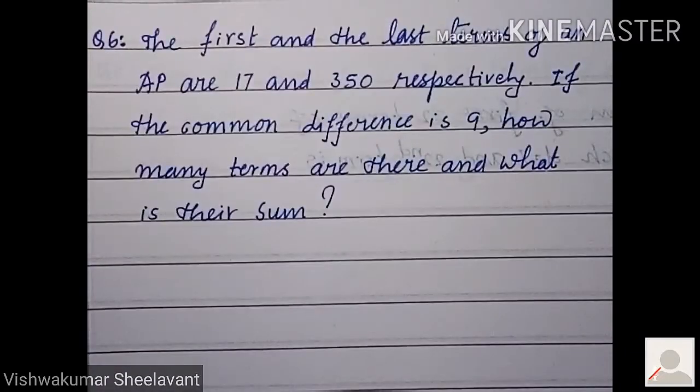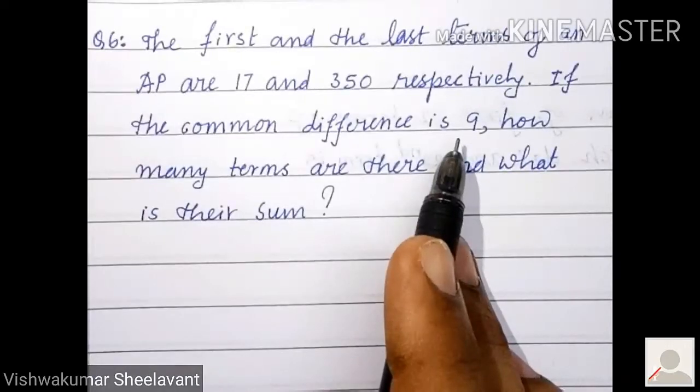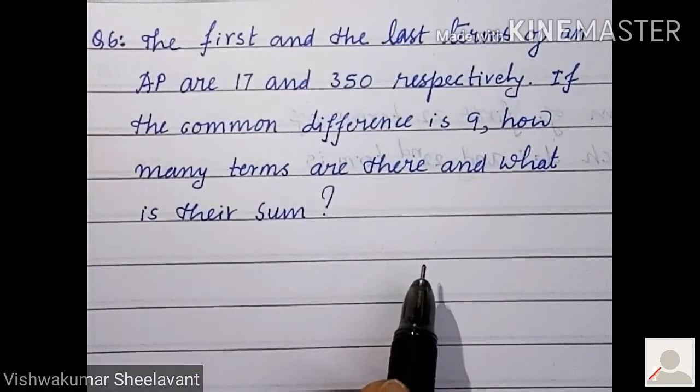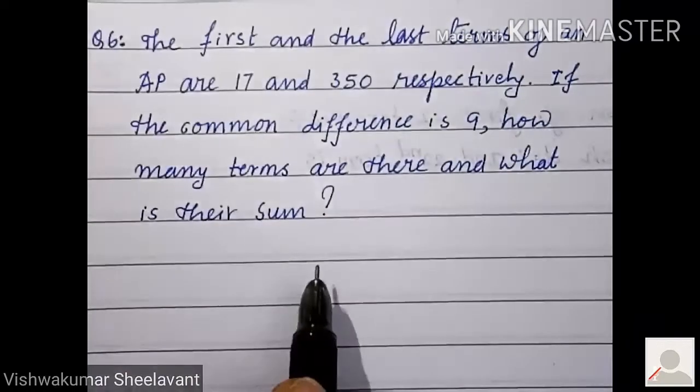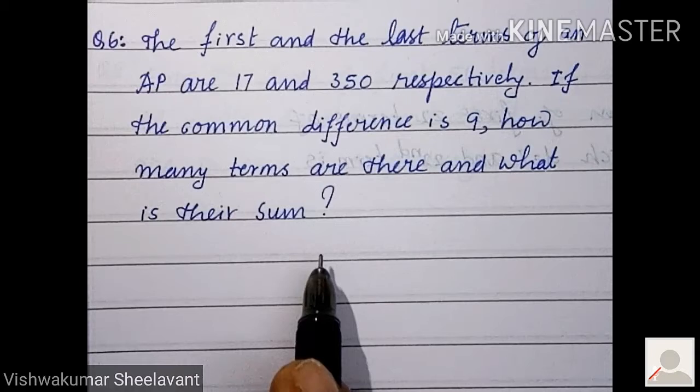It is exactly reverse of the previous problem. There, we calculated d and n because sum was given. Now two terms are given, we have to calculate n and the sum. So first we have to make use of the an formula to calculate n, after that we can calculate the sum easily.